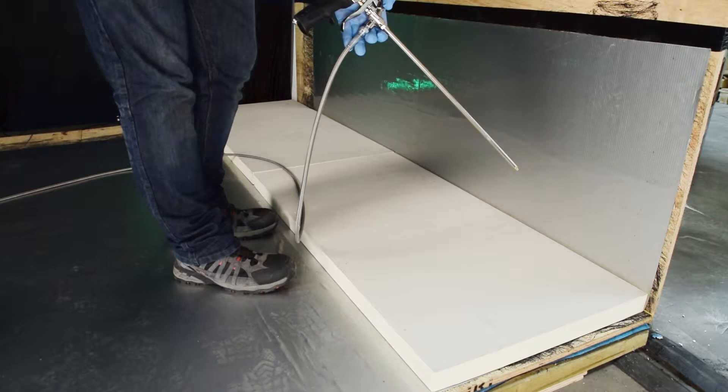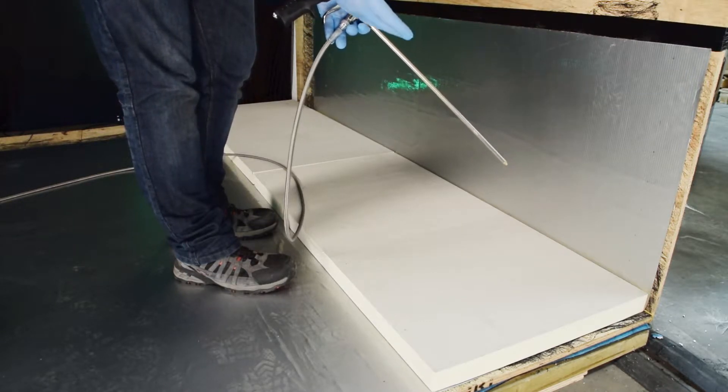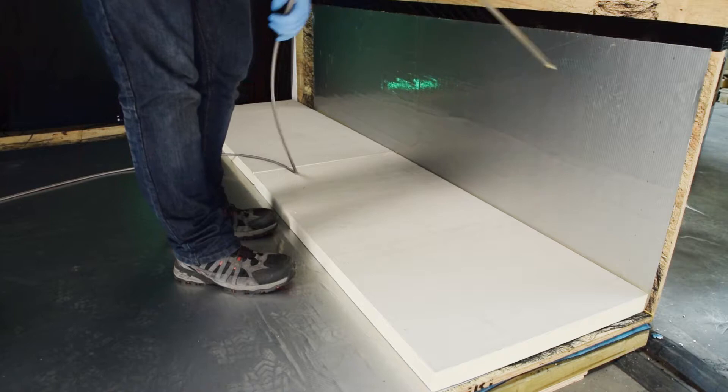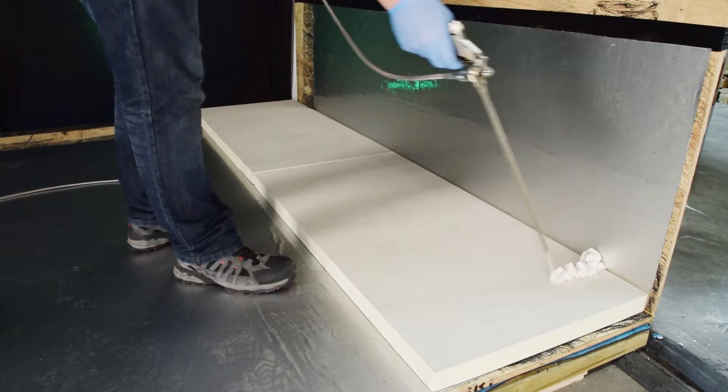On the gun, you have an adjustment screw at the back here. You can wind it out to increase the flow rate, or you can wind it in to reduce it. Here we go, and we're going to apply the adhesive down here.